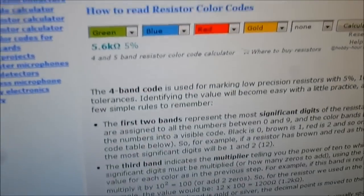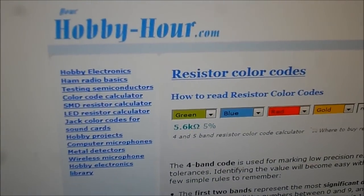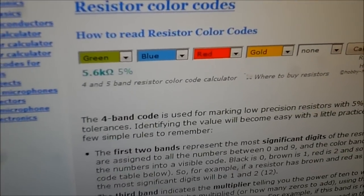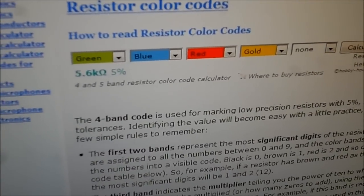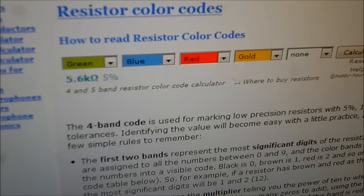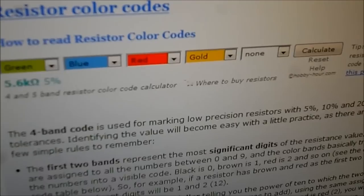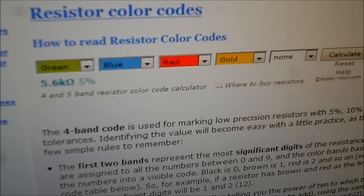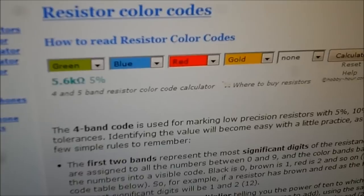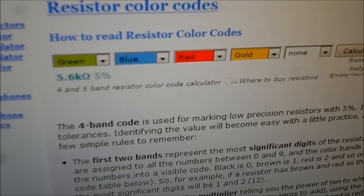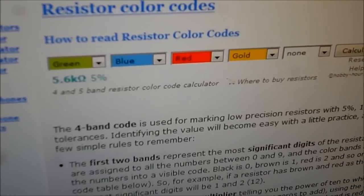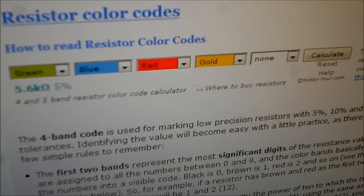There was a site here, it's hobbyhour.com, and I just simply punch in what, after determining what I felt was the best value. I got the green, blue and red, and gold is just the tolerance. Green is five, blue is six, and red is the multiplier, so it's five six with two zeros. Five six with two zeros is 5.6K ohms when you move the decimal over three places for thousandths.